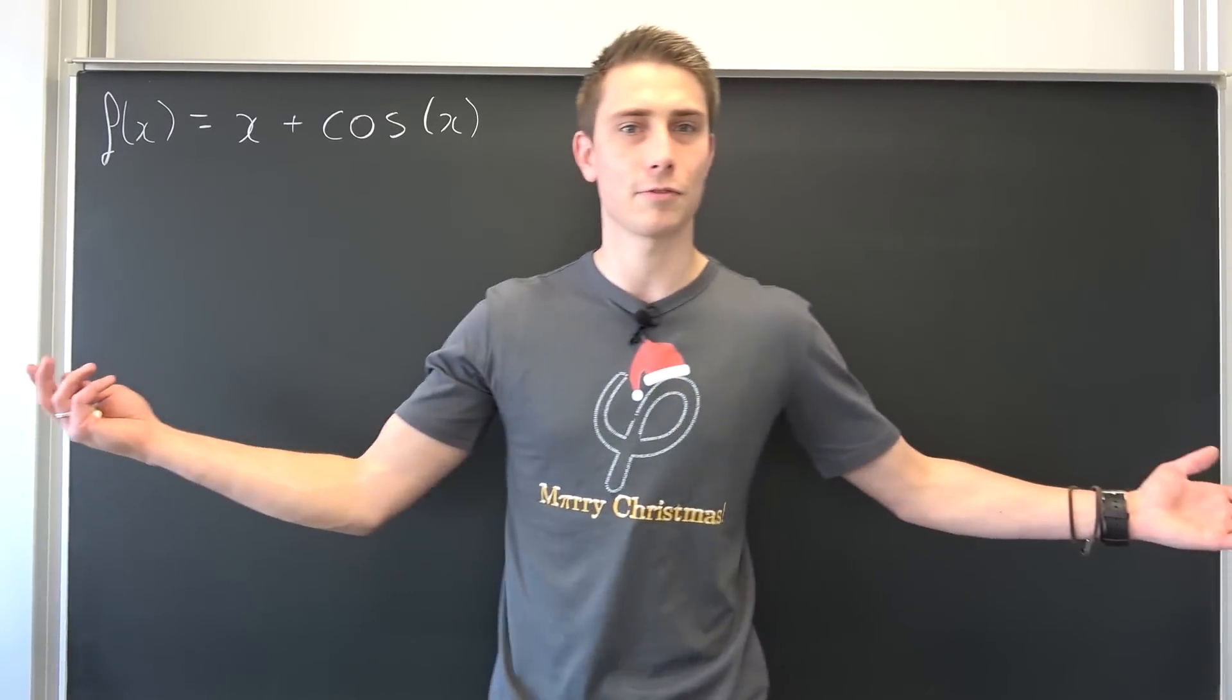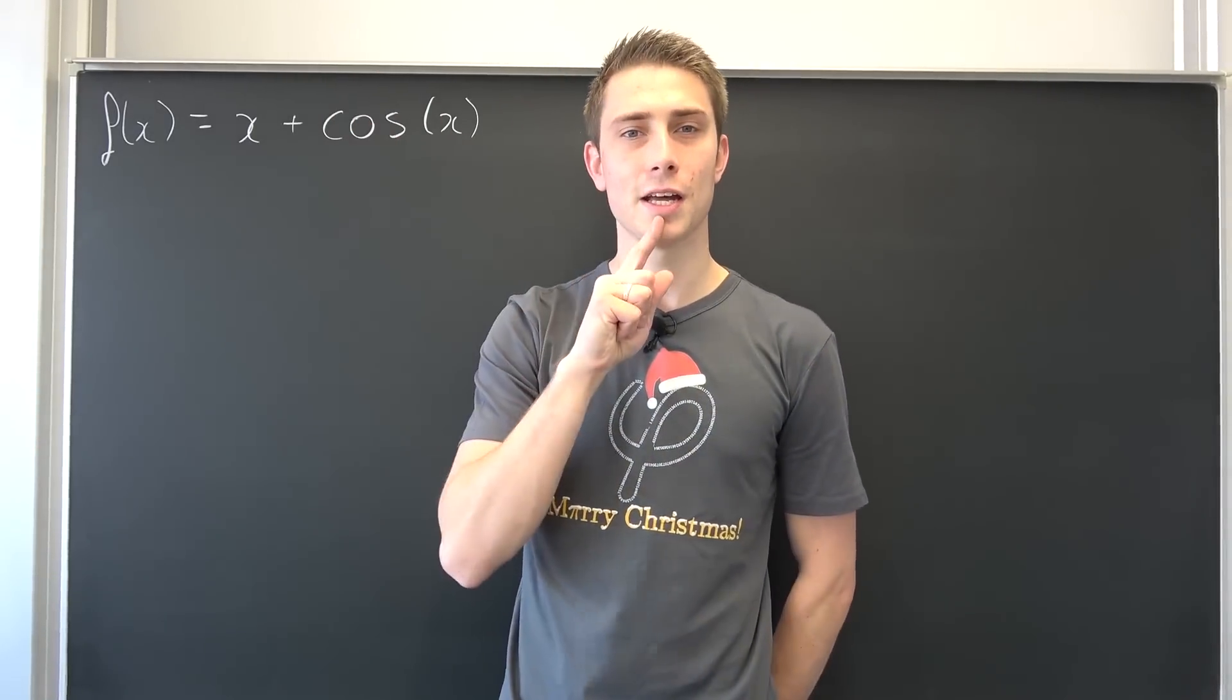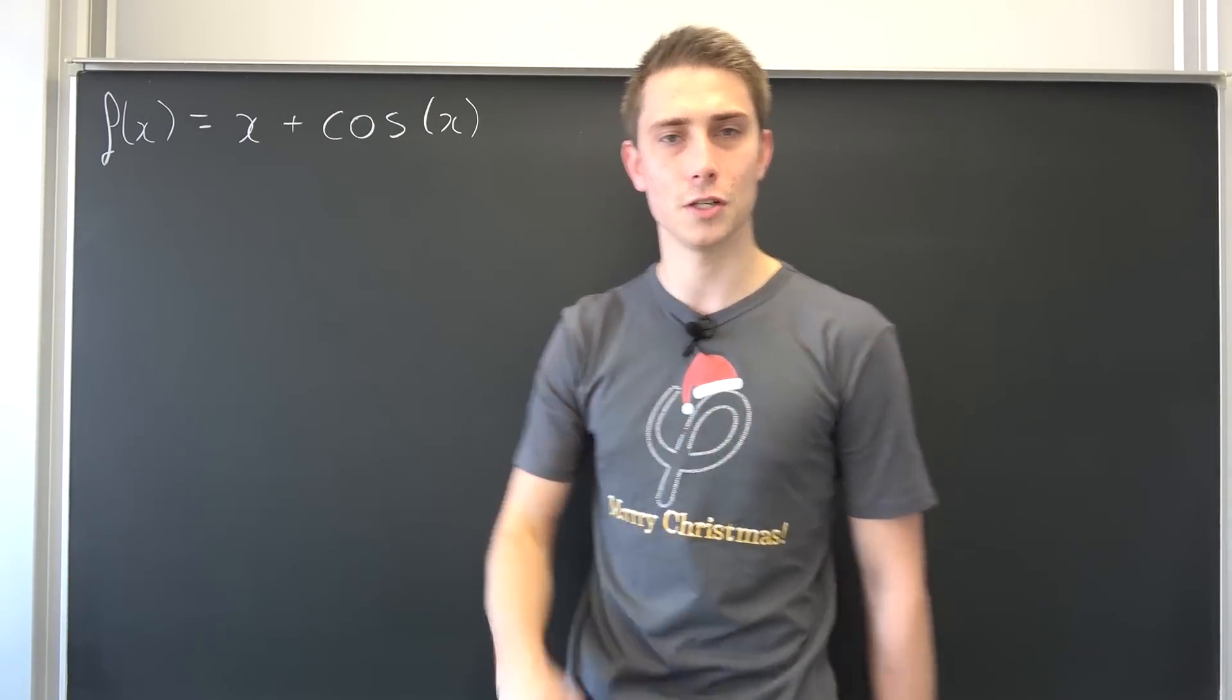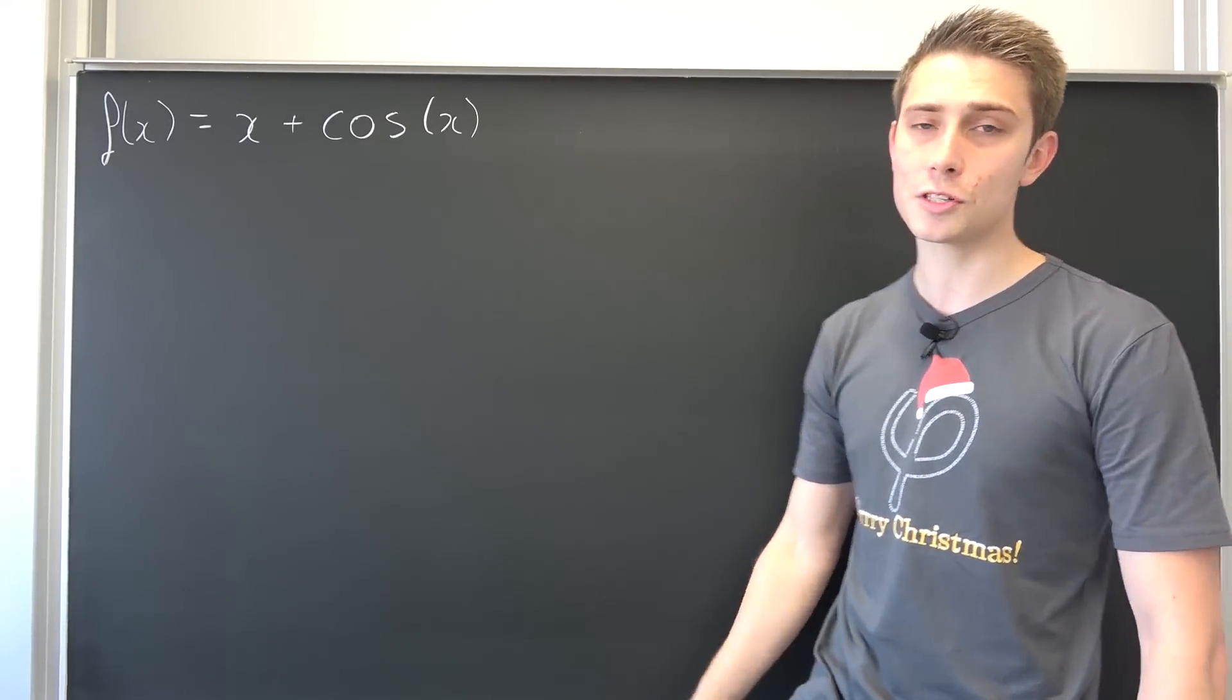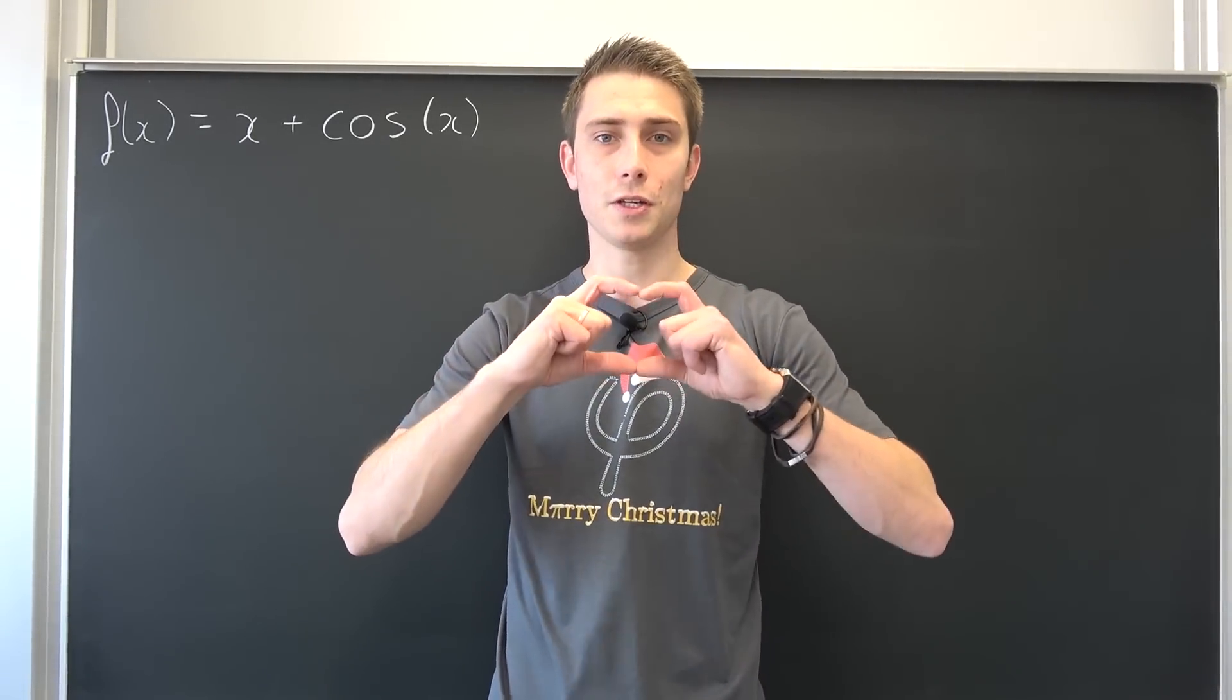We are going to do some epsilon-delta stuff today. We want to show that f of x being equal to x plus cosine of x is uniformly continuous on the whole of R. That's the first on this channel and it has been requested by one of the family members.